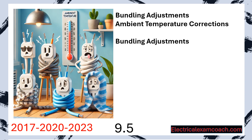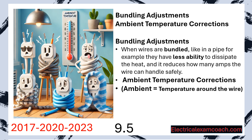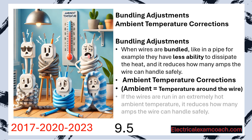Bundling adjustments work like this: when wires are bundled, like in a pipe for example, they have less ability to dissipate the heat and it reduces how many amps the wire can handle safely. Ambient temperature corrections are like this: if wires are run in an extremely hot ambient temperature, it reduces how many amps the wire can handle safely.